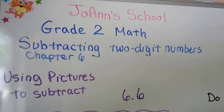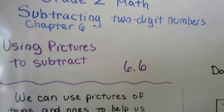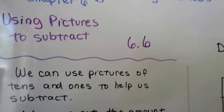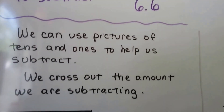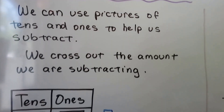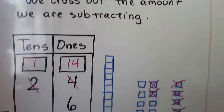Using pictures to subtract, number 6.6. We can use pictures of tens and ones to help us subtract. We just cross off the amount we're subtracting.